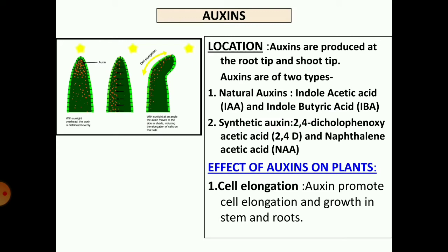Auxins are the first known hormones in plants. They are produced at the root tip and the shoot tip, from where they move downwards to bring about cell elongation. Auxins are basically of two types. Natural auxins, that is auxins produced by the plants themselves — they are indoleacetic acid (IAA) and indolebutyric acid (IBA). Synthetically also auxins are prepared: they are 2,4-dichlorophenoxyacetic acid (2,4-D) and naphthaleneacetic acid (NAA).